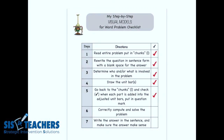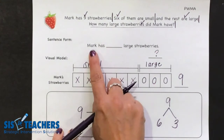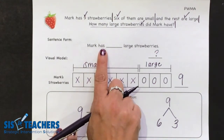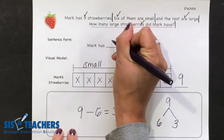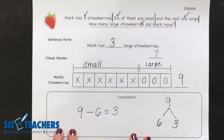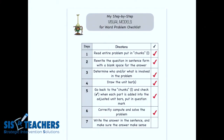So going back to our checklist, we've now correctly computed the story problem. Remember the sentence form we wrote in step two — it's time to circle back and make sure our answer is fully complete. Looking at our journal page: 'Mark has ___ large strawberries.' We know now that Mark has three large strawberries, which means we've completed this process. We can check off the last step: write the answer in the sentence and make sure the answer makes sense.